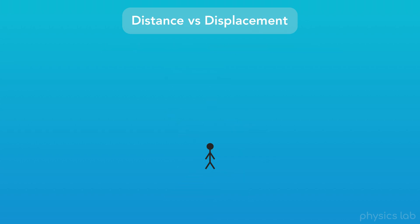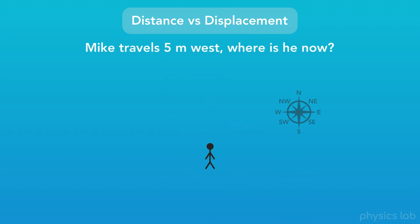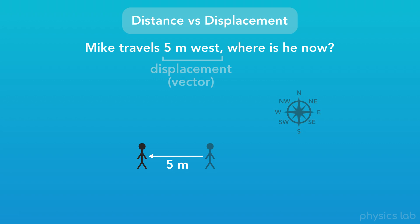Now instead, say we have a compass, and we're told Mike travels 5 meters west. Now we know exactly where he is. Here, we were given a displacement, which is a vector, and it includes both the magnitude and the direction. Think of it as taking a distance value and adding on a direction.